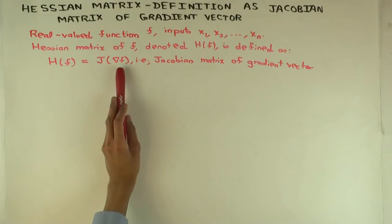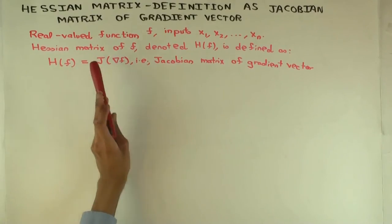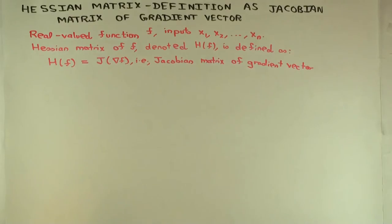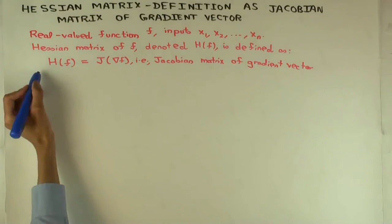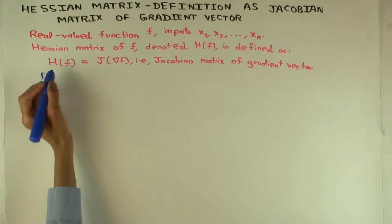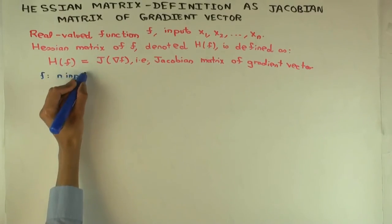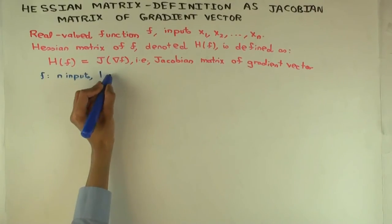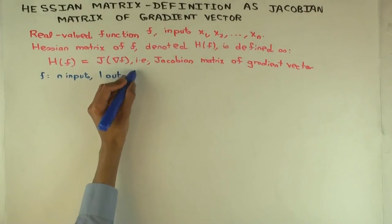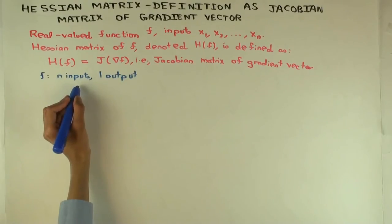Now why is that the correct notion of second derivative? Well, what would it mean to say I take the second derivative of F? So starting off with F, has how many inputs, how many outputs? Now if you have a function with just one output, then the correct notion of the derivative is just the gradient vector.